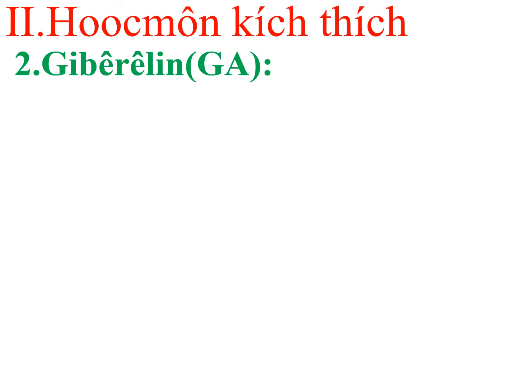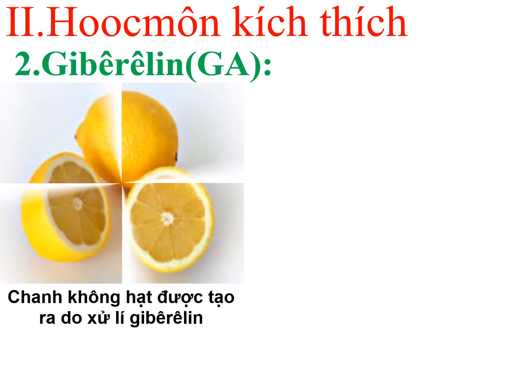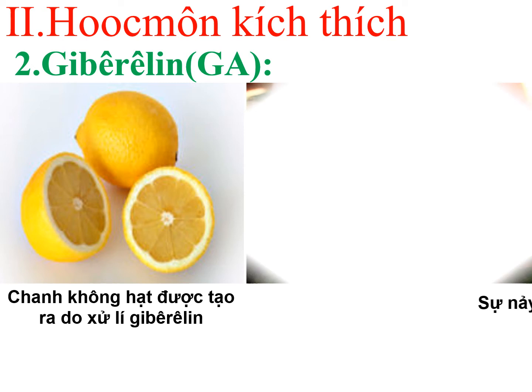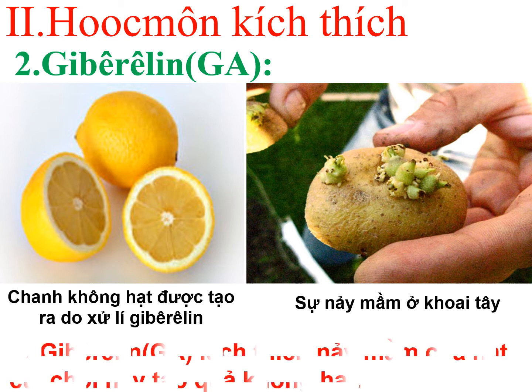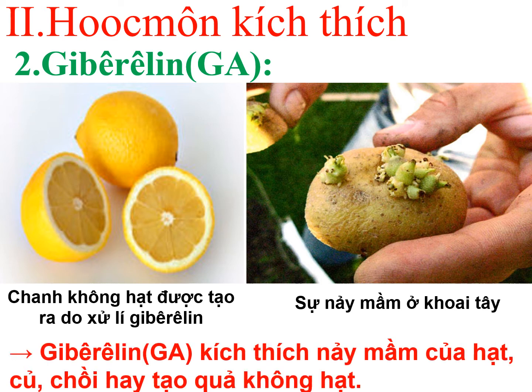Quan sát thêm hình ảnh: đây chính là quả chanh không hạt được tạo ra bởi xử lý gibberellin. Hoặc để thúc đẩy sự nảy mầm của củ khoai tây diễn ra nhanh hơn thì người ta cũng xử lý bởi gibberellin. Qua đây tác động của gibberellin là kích thích nảy mầm của hạt, của củ hay của chồi; bên cạnh còn tạo quả không hạt.